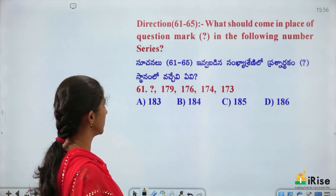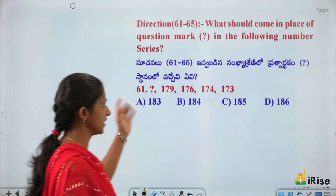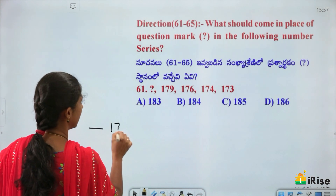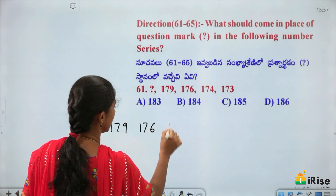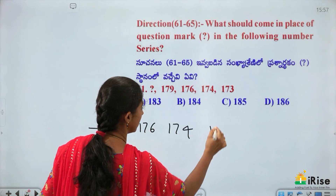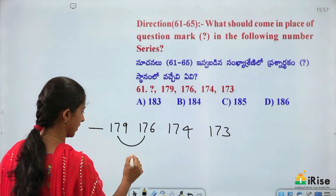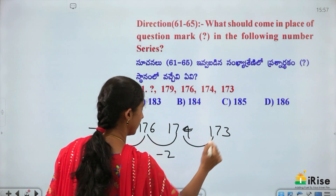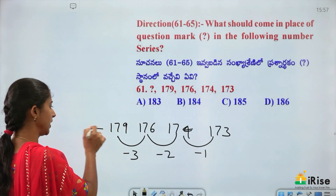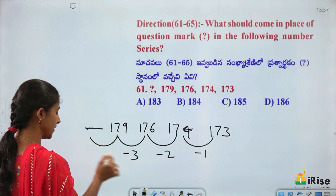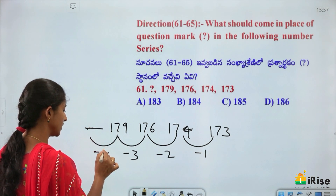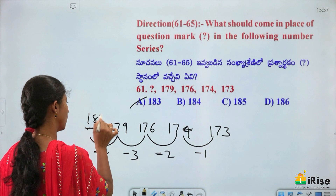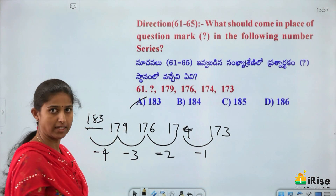Number series question: 179, 176, 174, 173 — what comes before? The differences are: minus 3, minus 2, minus 1. So before 179, the difference should be minus 4, meaning we add 4 to 179. The answer is 183.